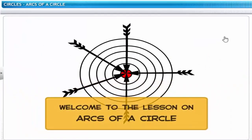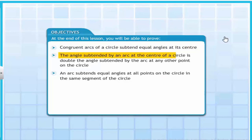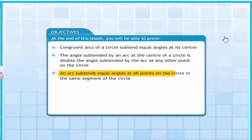Welcome to the lesson on arcs of a circle. At the end of this lesson, you will be able to prove that congruent arcs of a circle subtend equal angles at its center. You will also be able to prove that the angle subtended by an arc at the center of a circle is double the angle subtended by the arc at any other point on the circle, and that an arc subtends equal angles at all points on a circle in the same segment.